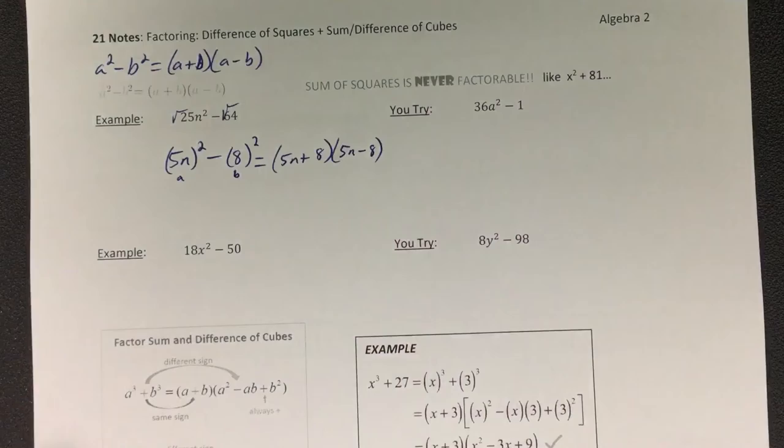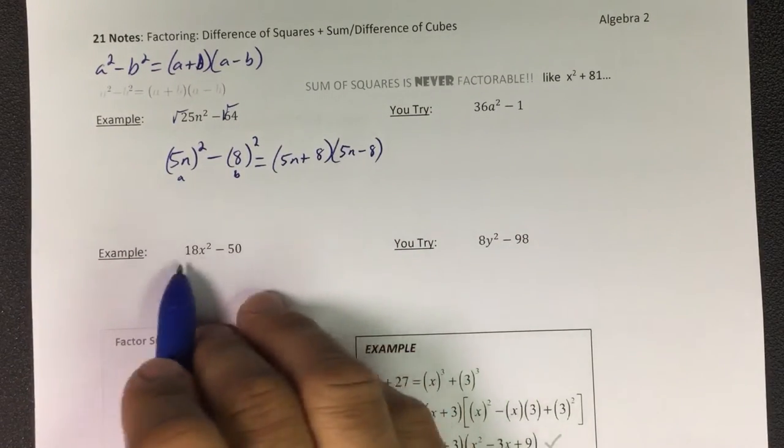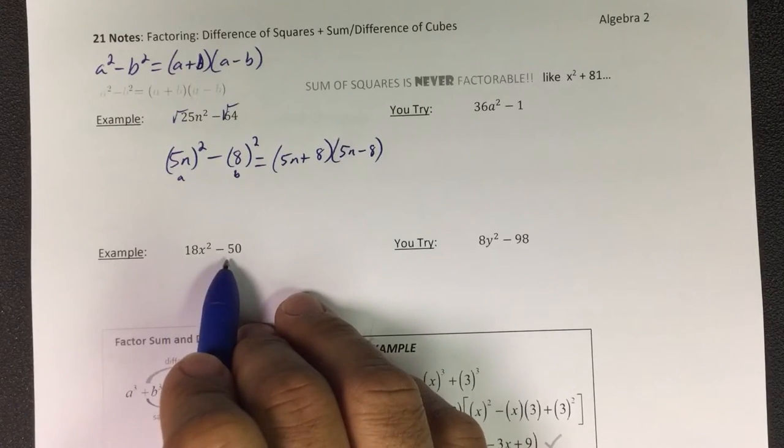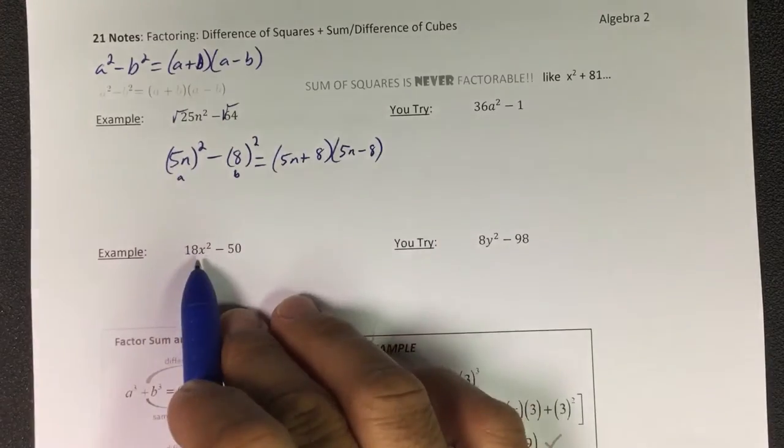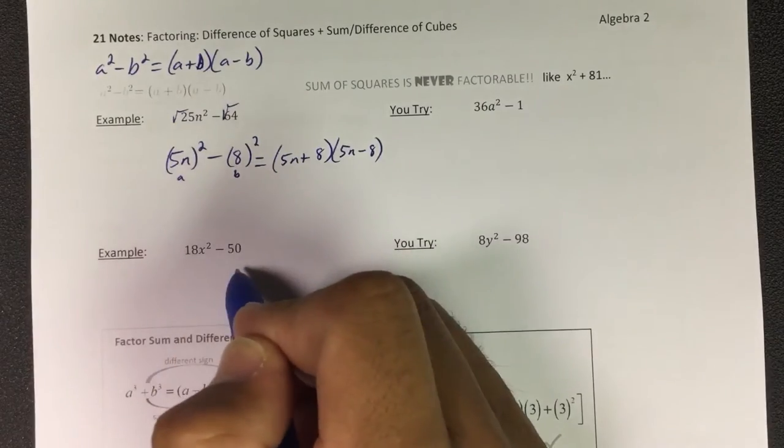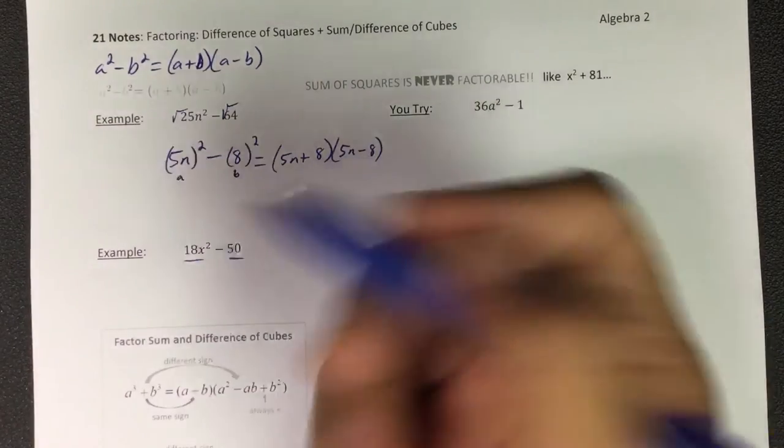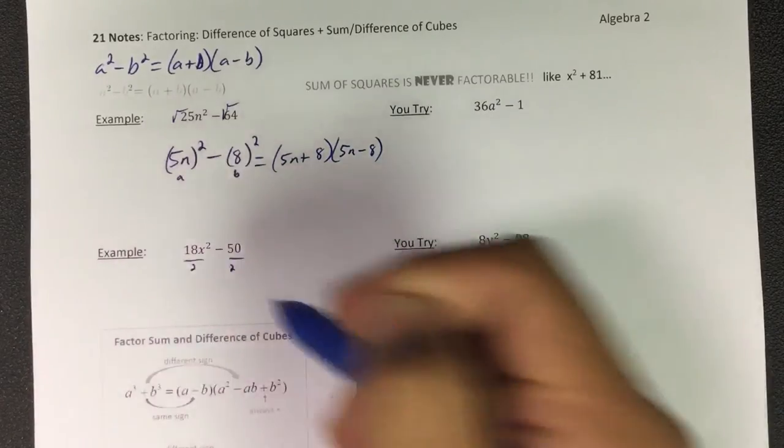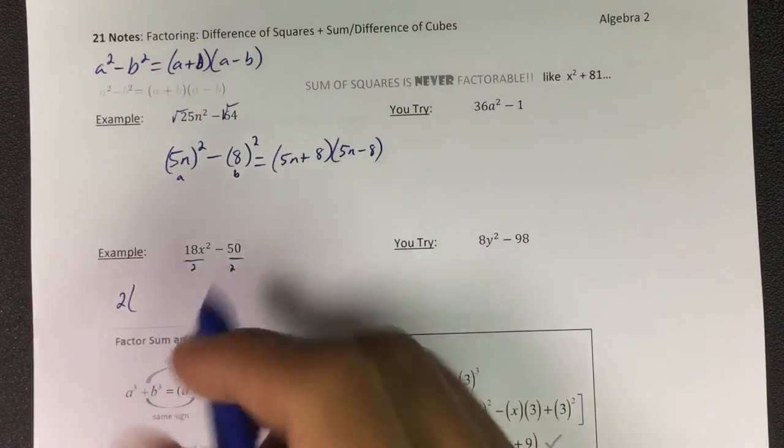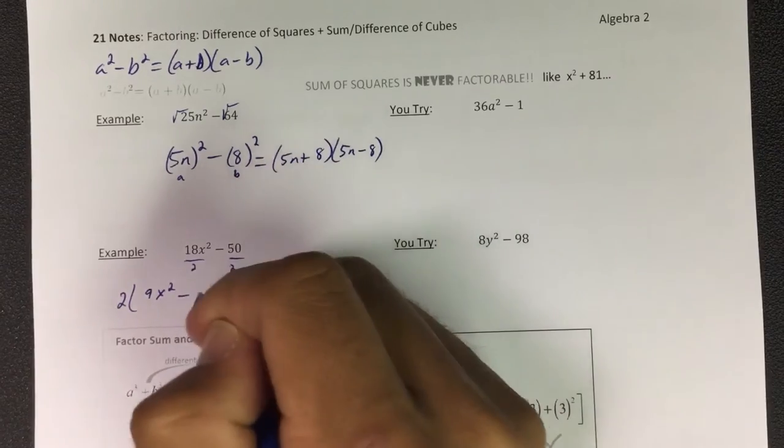Same thing here. Anytime I'm trying to do this, first of all I got to make sure that I can write it as a². The square root of 18 doesn't work, but one thing I can do is I could divide both of these by 2. That's GCF, so I could do GCF first. I divide them both by 2, the 2 comes out in front and it's 2 times, now it's 9x² - 25.